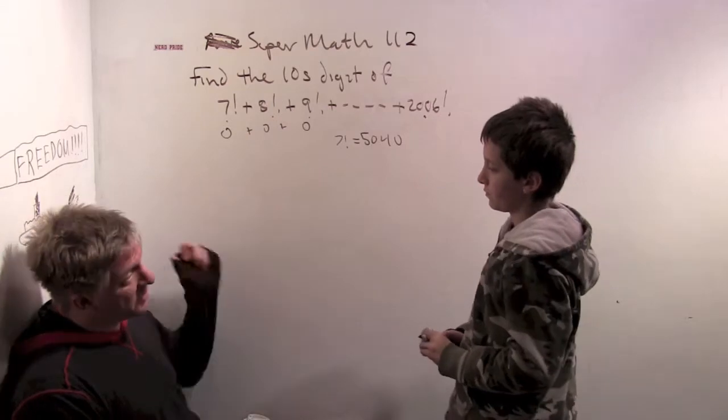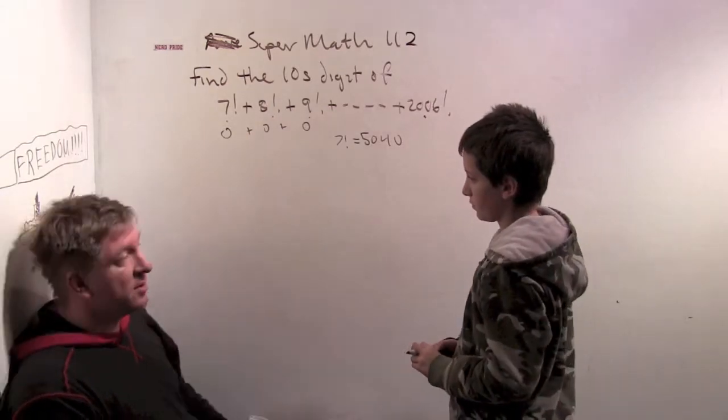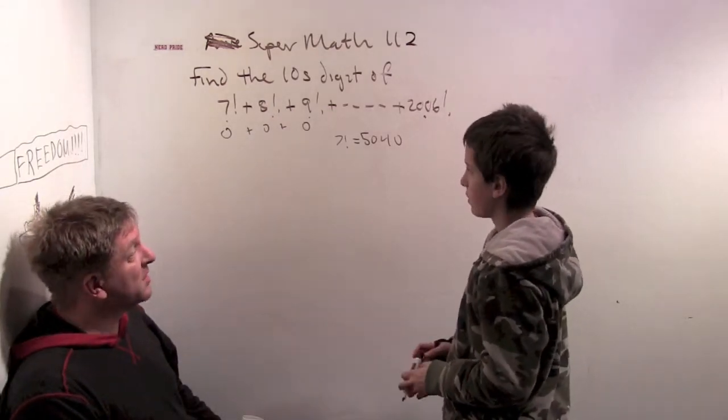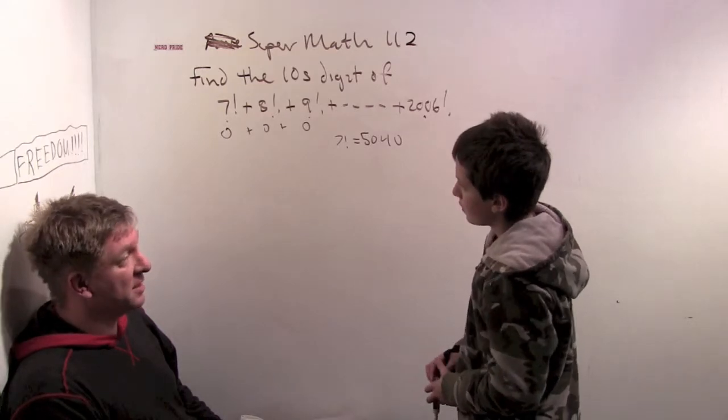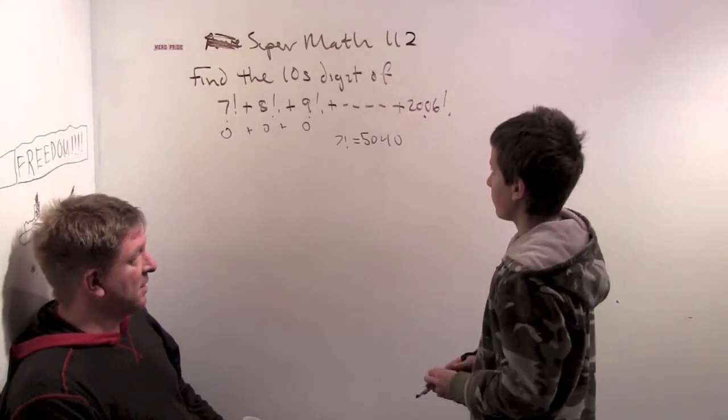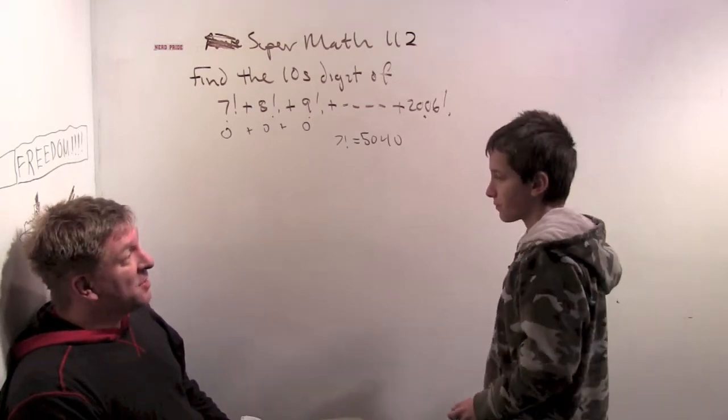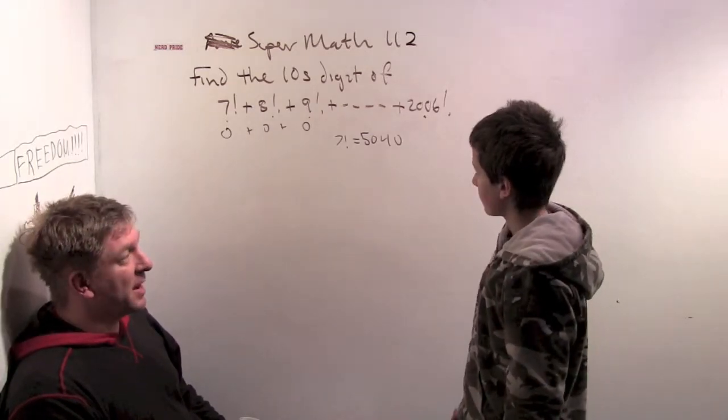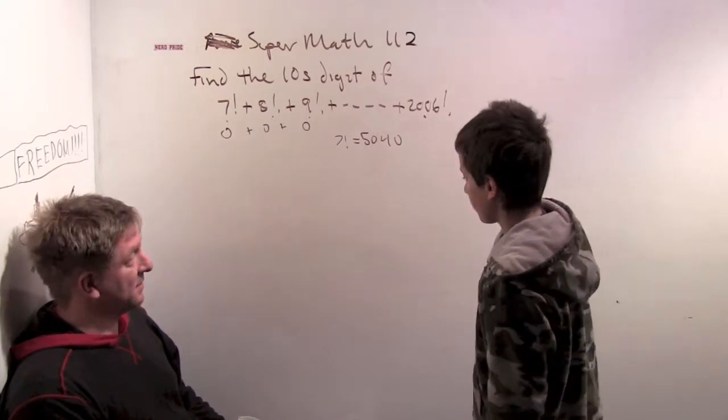So that makes calculating what digit super easy? The ones digit. The ones digit of this sum is super easy because why? Because all the ones digits in every single one of these numbers are zero. So that gives you a little bit of hope that calculating the tens digit might also be easy.